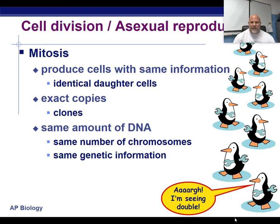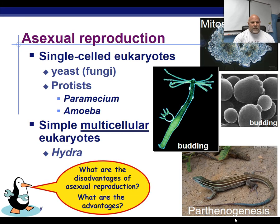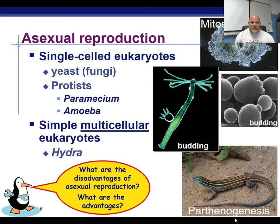One of the advantages we're going to see with sexual reproduction is we can create a huge amount of variation that helps organisms adapt to their environment. But we do see asexual reproduction in things like yeast, amoebas, and parameciums, and hydras do it through budding. Even some complicated organisms like desert whiptail lizards will use parthenogenesis to produce offspring — they're all females, just generation after generation of females.